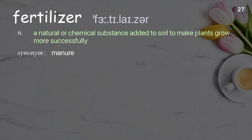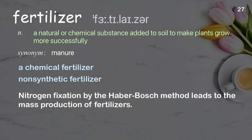Fertilizer: a natural or chemical substance added to soil to make plants grow more successfully. Examples: a chemical fertilizer, non-synthetic fertilizer. Nitrogen fixation by the Haber-Bosch method leads to the mass production of fertilizers.